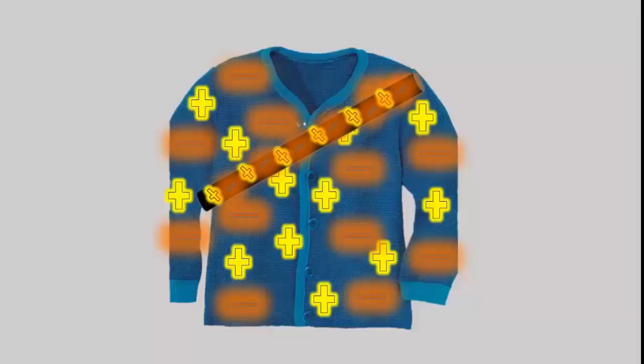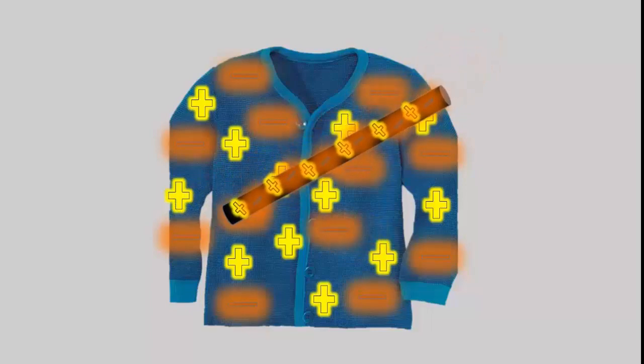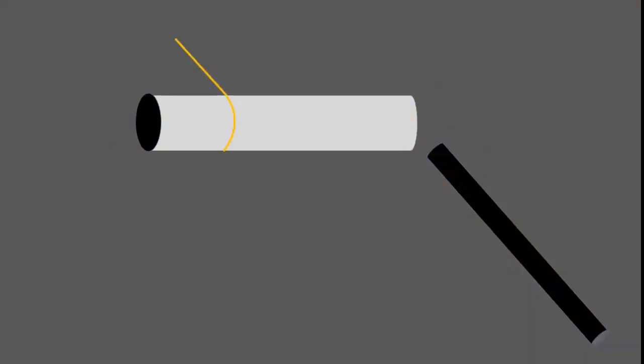Take an ebonite rod and rub it with wool so it becomes negatively charged. Now bring the ebonite rod near the paper cylinder. The cylinder gets attracted towards the rod.